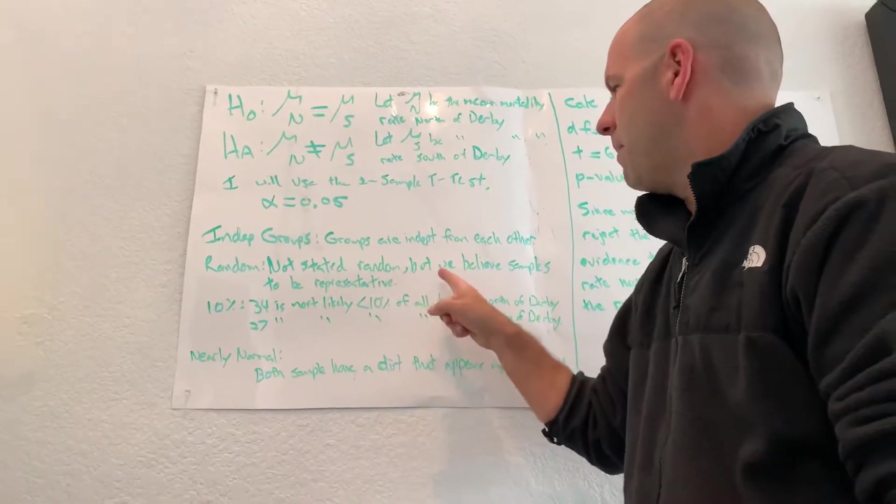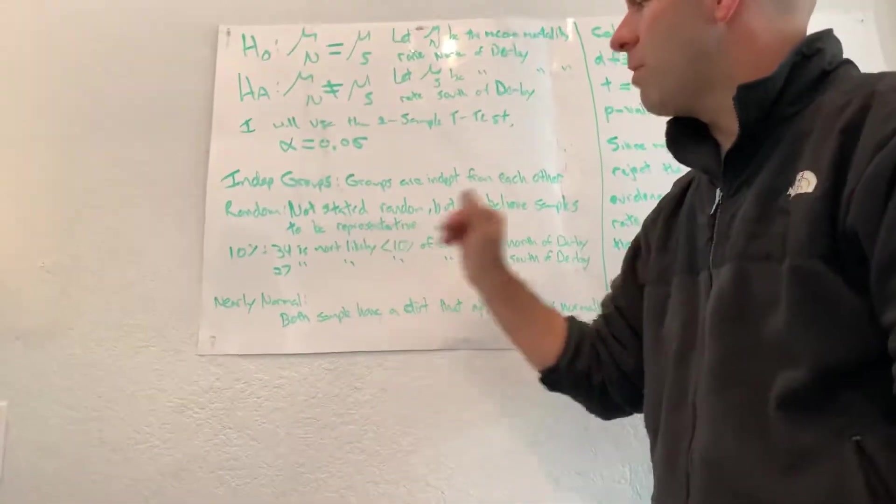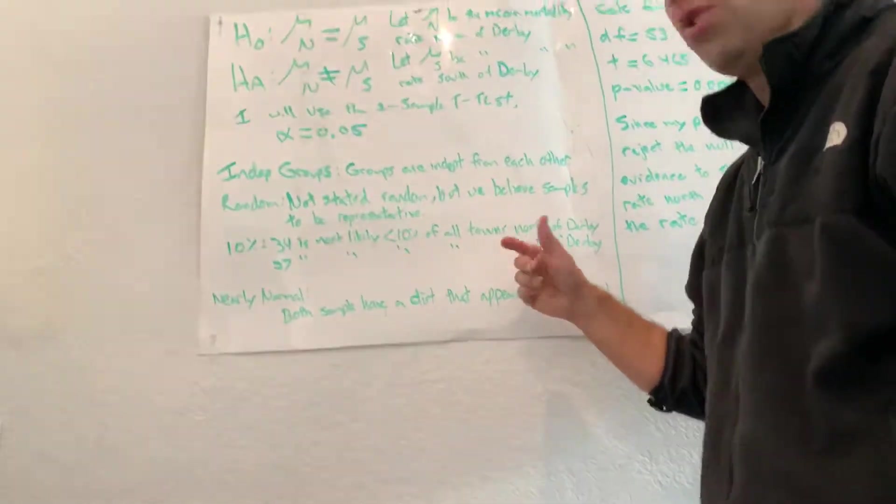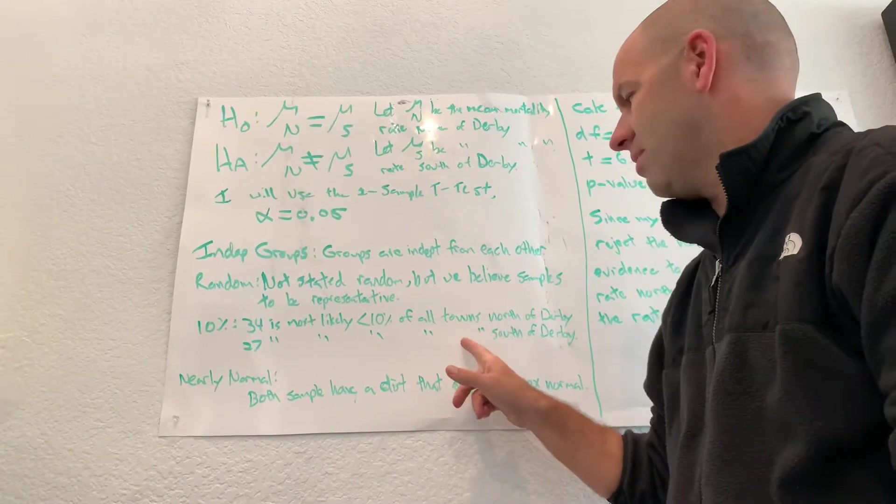Random—not stated random, but I believe both samples to be representative. 34 is most likely less than 10 percent of all the towns north of Derby. 27 is most likely less than 10 percent of all towns south of Derby. We don't know for sure, so that's what we say: most likely.